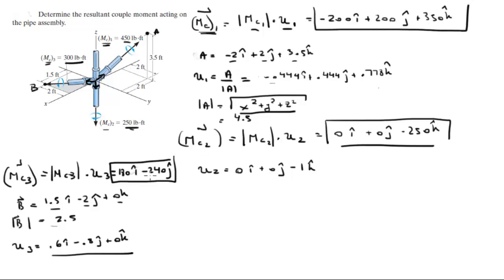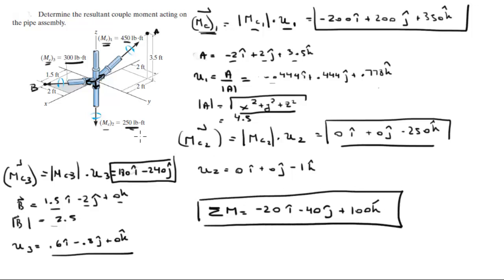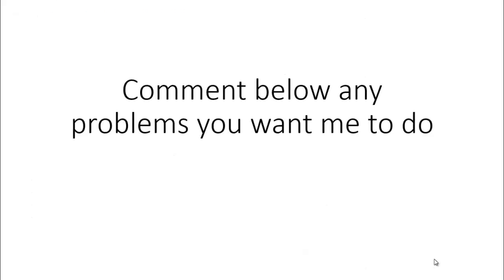Now you have the Cartesian vector form of all three moments, so all you have to do is add them up. The sum of the moments comes out to be minus 20 i minus 40 j plus 100 k. That's the final answer — you just added MC1 + MC2 + MC3 to get the resultant couple moment. Please comment below if you want me to do any problems and I'll be happy to help. Thank you.